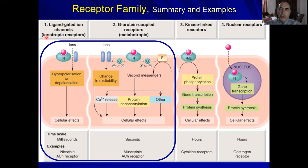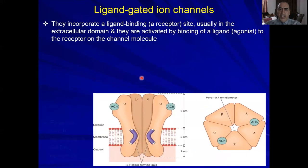Ligand-gated ion channels are called ionotropic receptors because they deal with the passage of ions through these channels upon activation by binding of a ligand. G-protein coupled receptors are called metabotropic receptors because they don't involve direct ion channel opening; rather, they activate G-protein, which activates subsequent second messengers. Let us now delve into details about ligand-gated ion channels, the first class.